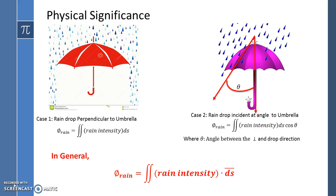In case two, the rain droplets are incident at an angle theta with respect to the area. And hence, the flux due to rain is surface integral of rain intensity, surface area, and cosine theta.